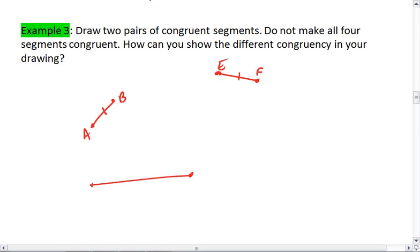I'll then draw the longer segment, JK, and another long segment. We'll say this is YZ. Now, I don't want to show that JK is equal to AB, so I'm going to use two dashes. I'll do the same thing for ZY to show that those are congruent.